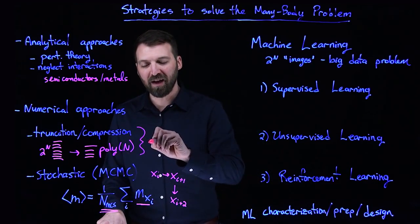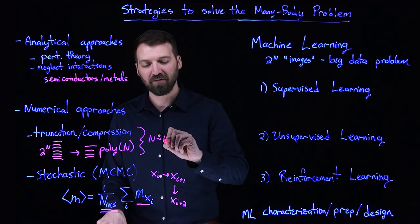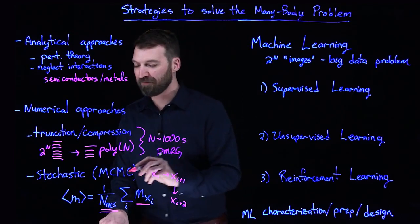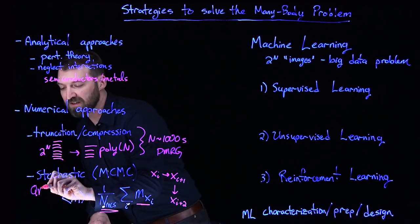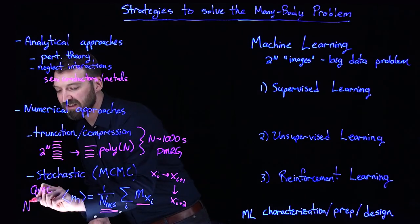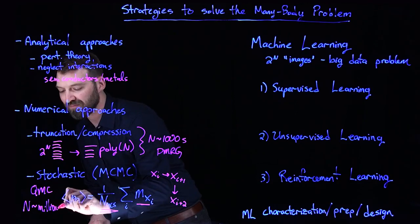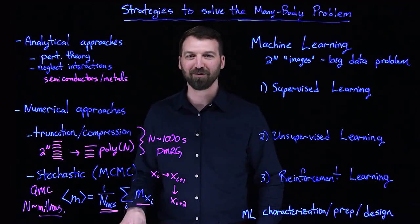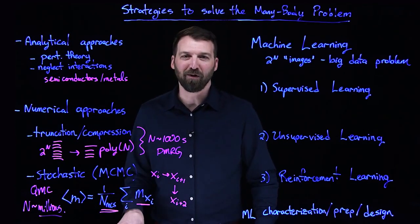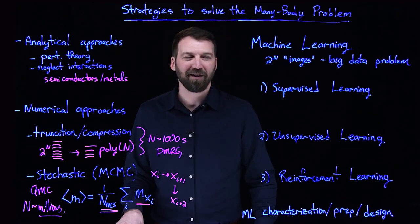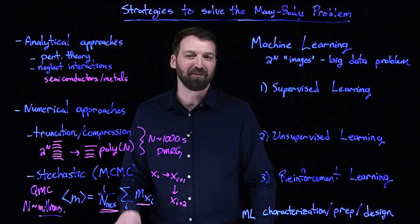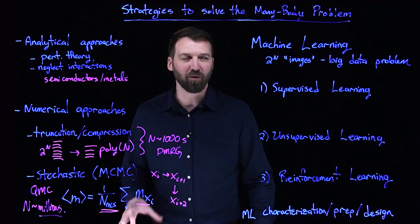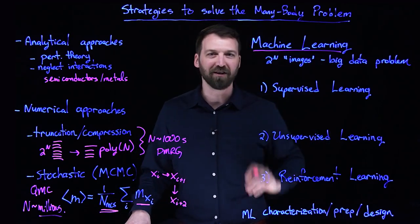Where these methods do work, you can get N's in the thousands, say for DMRG. And for stochastic quantum Monte Carlo methods, you can get N's in the millions or more. So when these methods work, we should definitely use them. There's many cases where we know they don't work. And what we're doing now in physics, in computer science, in quantum chemistry, in academia and industry around the world, is turning to new approaches based on machine learning.